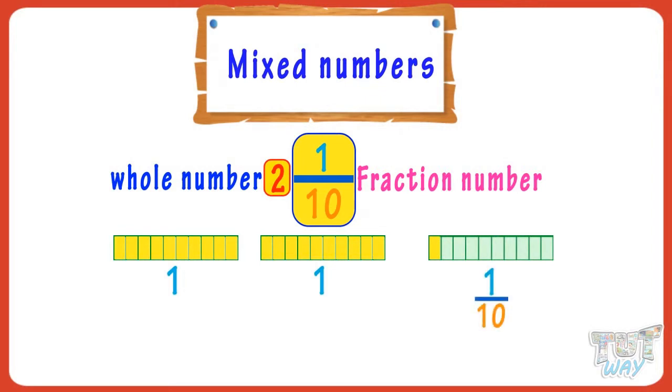We say this in decimal as 2 and 1 tenths. 1 tenths is written as 0.1, so it became 2.1. Now let's take one more example.